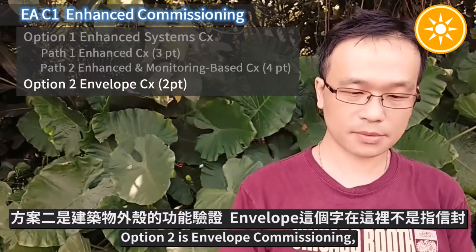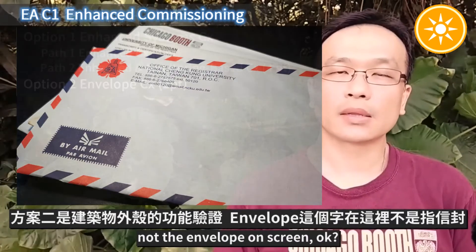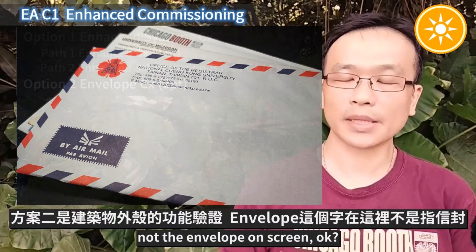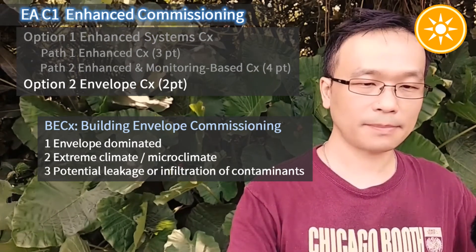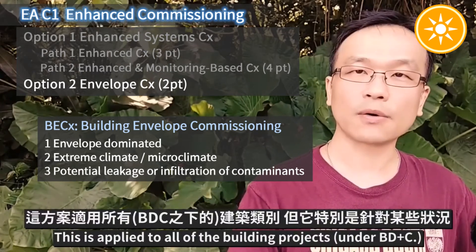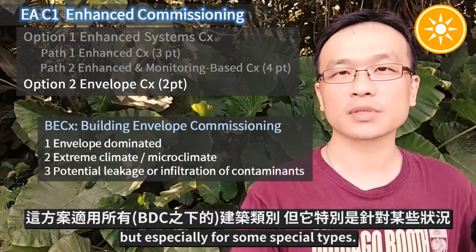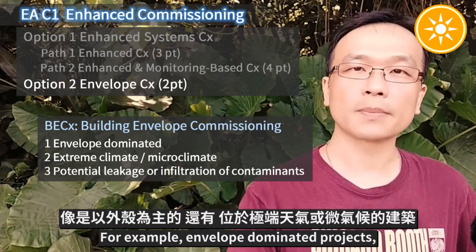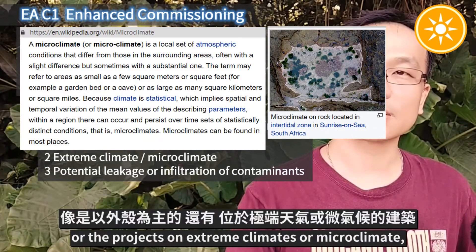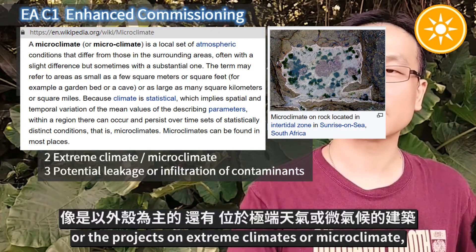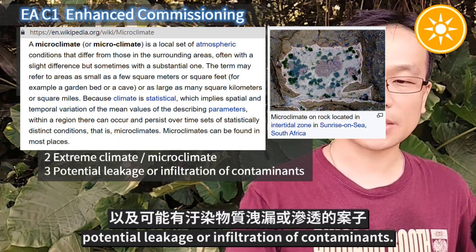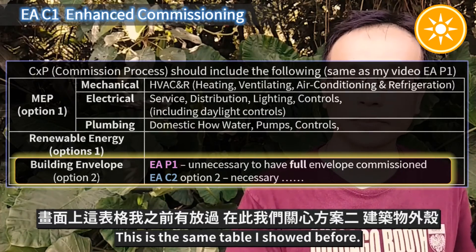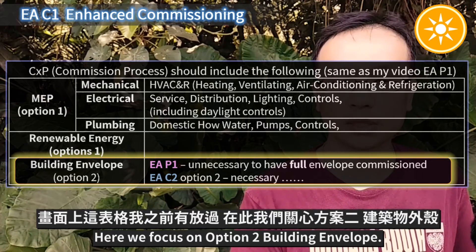Option two is Envelope Commissioning — not the envelope shown on screen. We focus on BECX, Building Envelope Commissioning. This applies to all building projects, but especially for special types such as envelope-dominated projects, projects in extreme climate or microclimate, and projects with potential leakage or infiltration of contaminants. This is the same table shown before, but here we focus on option two, the building envelope.